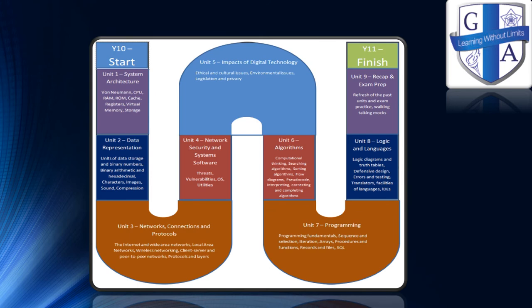As you can see here, this is our roadmap. We start with system architecture, then data representation, then network connections, then network systems and security, then the impact of digital technology, then algorithms, then programming, then logic and languages, and then we do a whole unit on recapping and preparing your child for their exam.